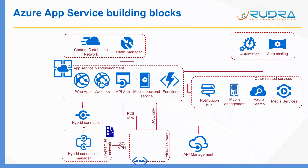Content Distribution Network is mainly used when you need to deliver content with optimum performance. For example, if your website is hosted in Australia and you have customers in Europe, you can deliver content with minimum latency using CDN. With Traffic Manager, you can deliver applications that are resilient to data center failures. Traffic Manager can distribute load across regions — for example, North Europe and West Europe. If North Europe goes down, Traffic Manager will automatically route all traffic to West Europe.